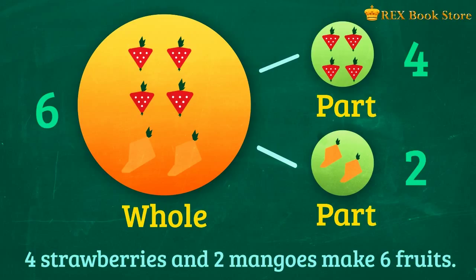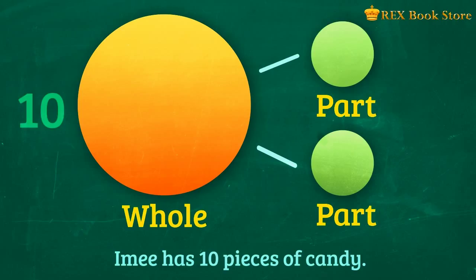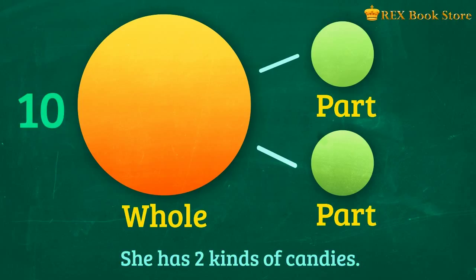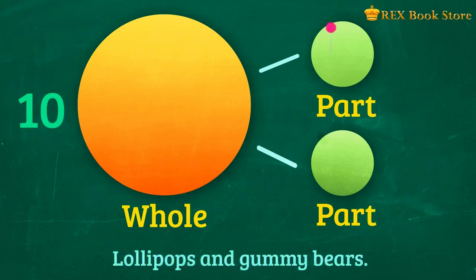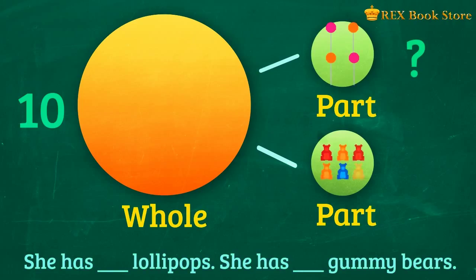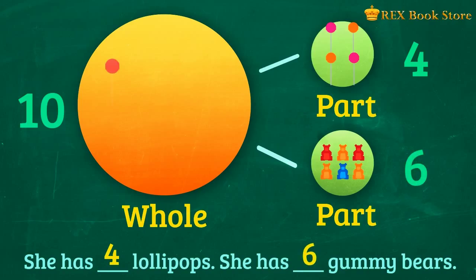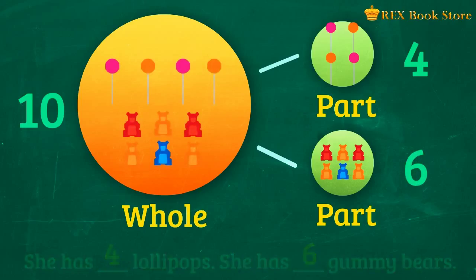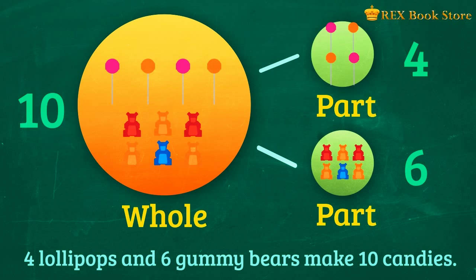Let's try another one. Aimee has 10 pieces of candy. She has 2 kinds of candies — lollipops and gummy bears. Can you count how many lollipops she has? She has 4 lollipops. And how many gummy bears does she have? Aimee has 6 gummy bears. So 4 lollipops and 6 gummy bears make 10 pieces of candy.